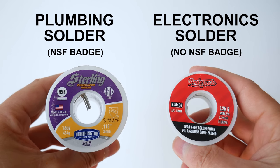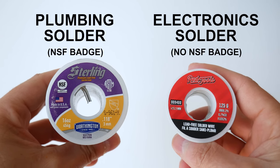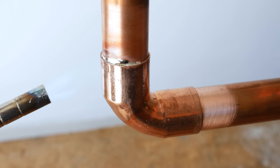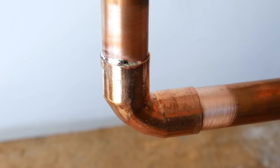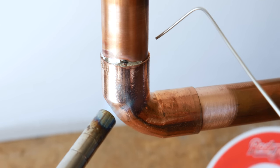Number two is using electronic solder instead of plumbing solder. There's a few reasons why this is not recommended, although if you tried soldering with it, it would most likely work.